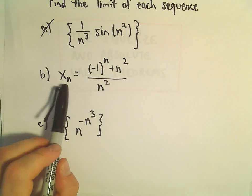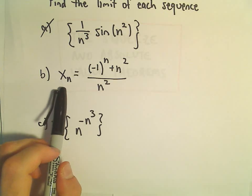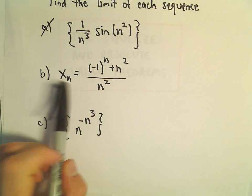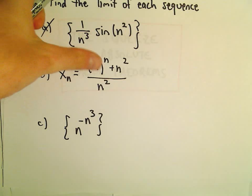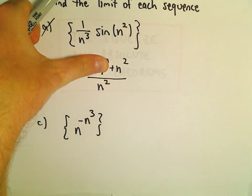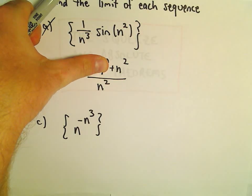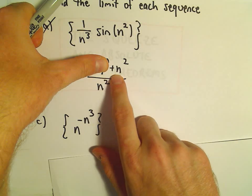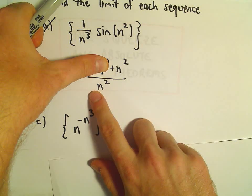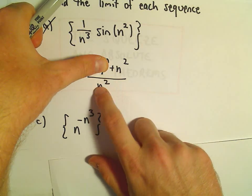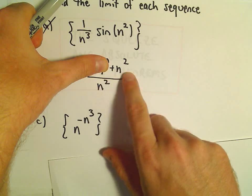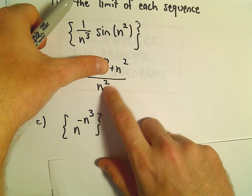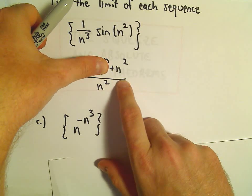Intuitively, what's going to happen: if you plug in larger and larger values for n, let's forget about the first part for a moment. We're going to get some big number squared over some big number squared — it's the same number. So this ratio, if it wasn't for the negative 1 to the n, we would just get 1.